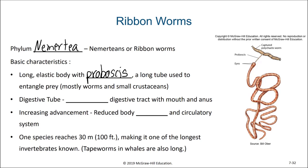This proboscis can evert from a pocket right above their mouth and surround their prey items. Nemertians have a complete digestive tract — a digestive tube containing both a mouth and an anus at distinct ends. They also have a body cavity, which flatworms did not, and a circulatory system. Some ribbon worms can grow incredibly long, with one species reaching up to 30 meters or 100 feet, making it one of the longest invertebrates known.